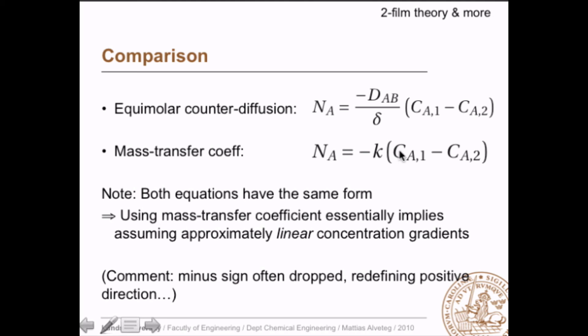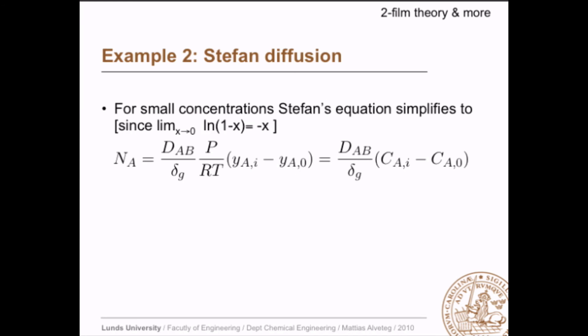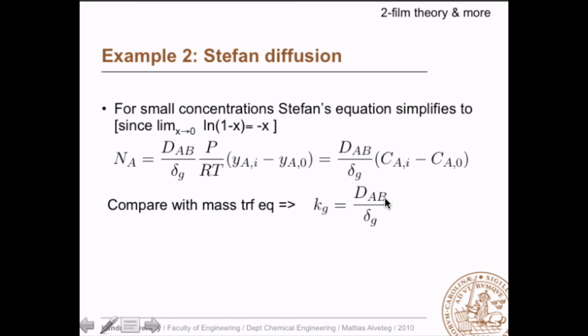Note that the minus sign is often dropped in the mass transfer coefficient equation — this is simply redefining the positive direction, since we know mass transfer goes from high to low concentration. In the other special case, Stefan diffusion, there is no linear concentration gradient. However, when concentrations are small, Stefan's equation simplifies to the same form as equimolar counter diffusion, because the limit of ln(1−x) is −x as x approaches zero. So the mass transfer coefficient equals the diffusivity divided by the film thickness.